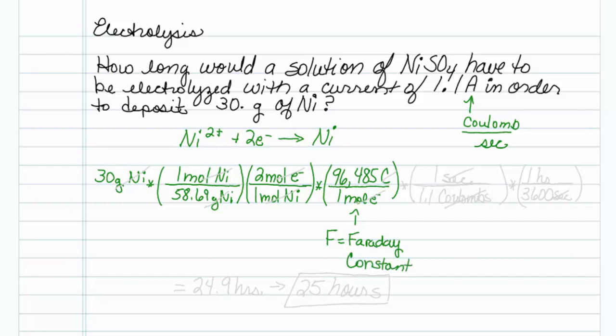Now hopefully you can see where I'm going at this point. I just need to take my amps. I have 1.1 coulombs for every one second, and the time I'm asked for is in hours, so there are 3,600 seconds in one hour.